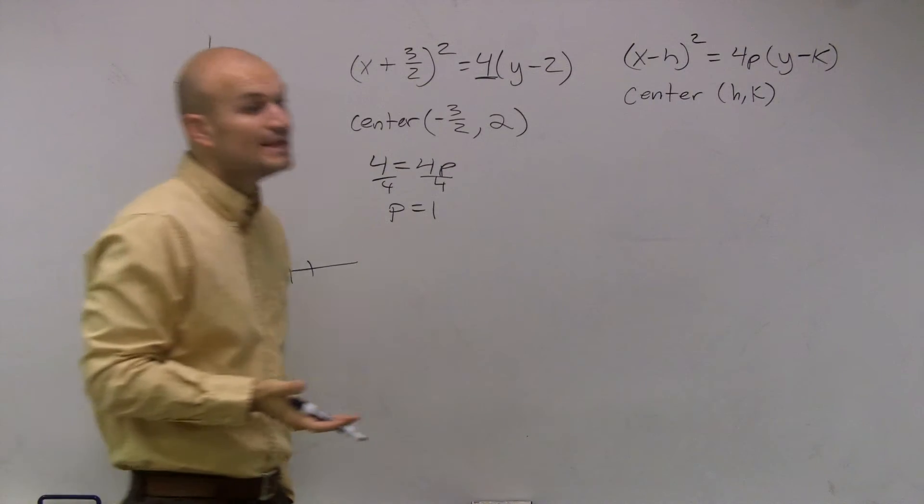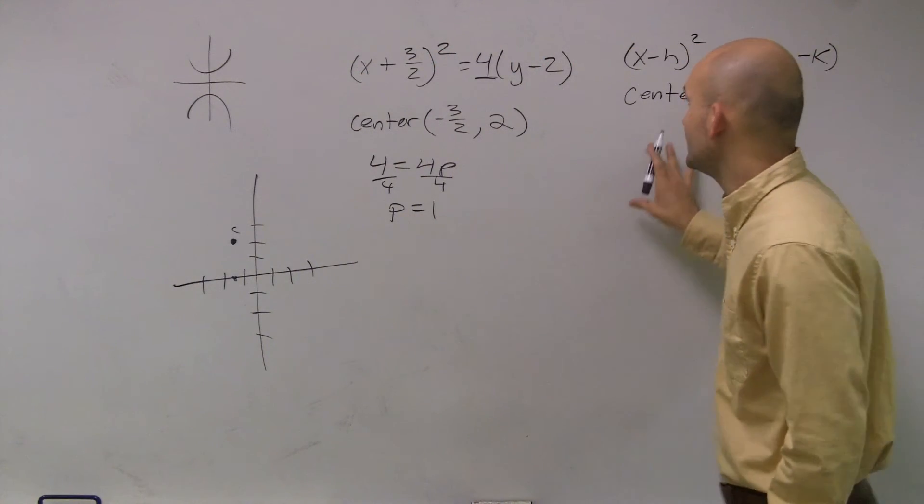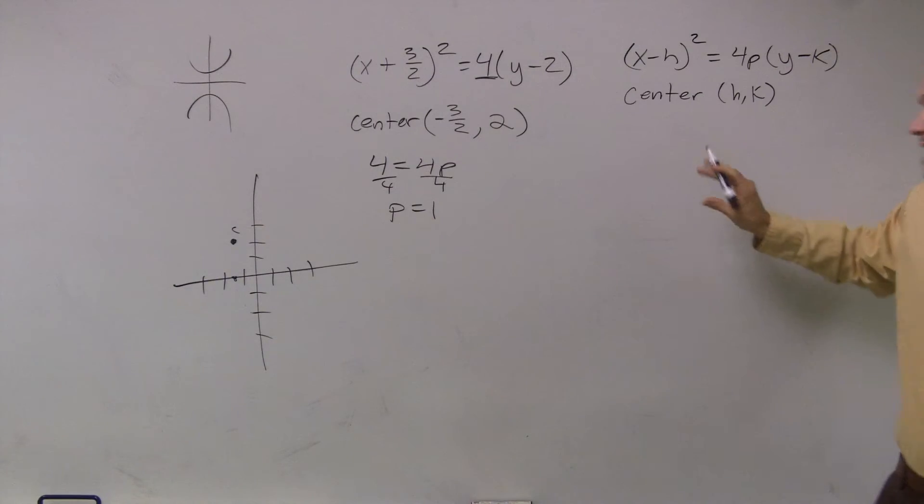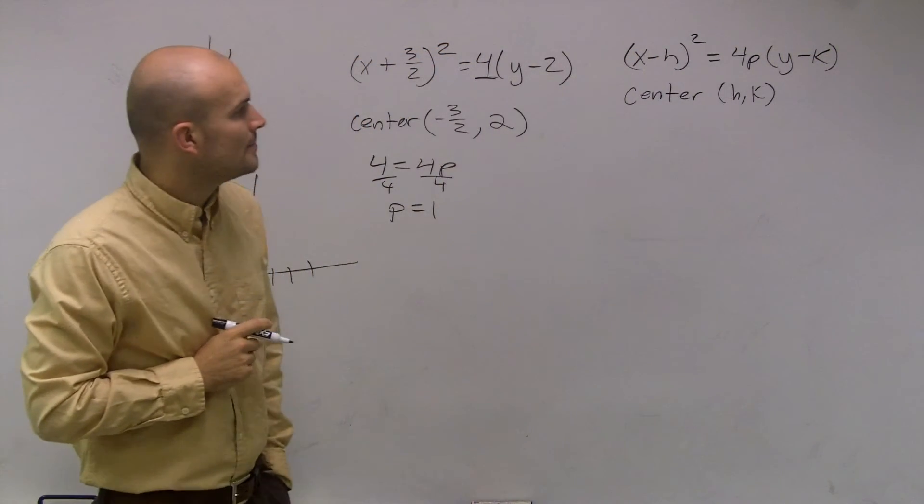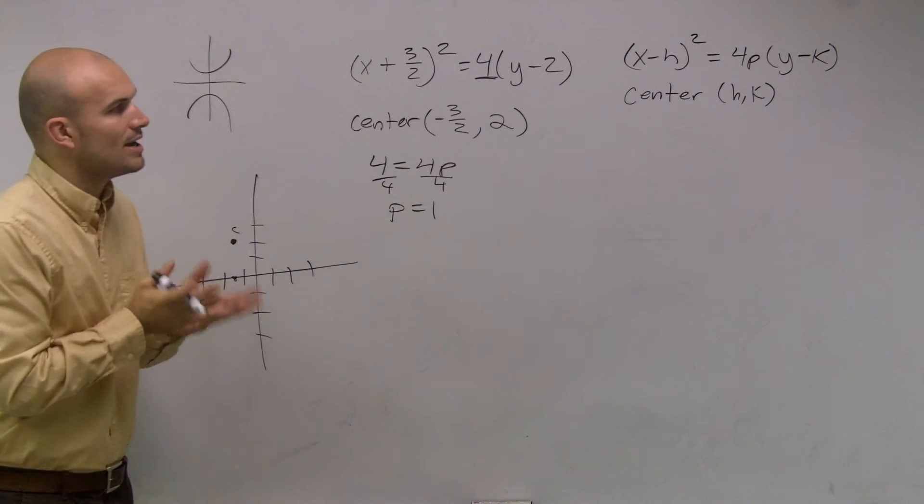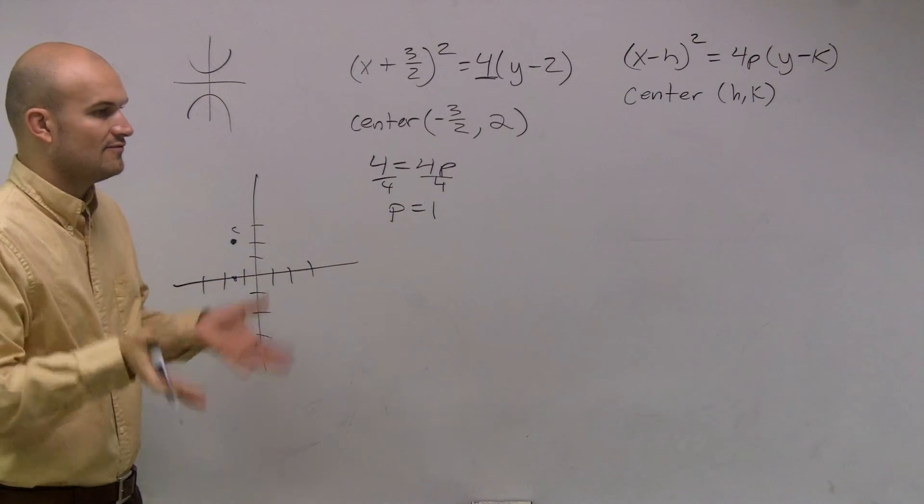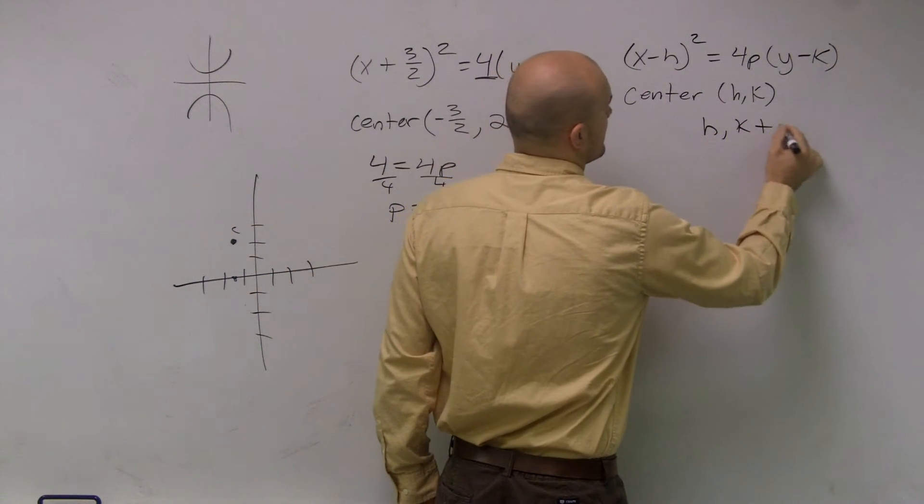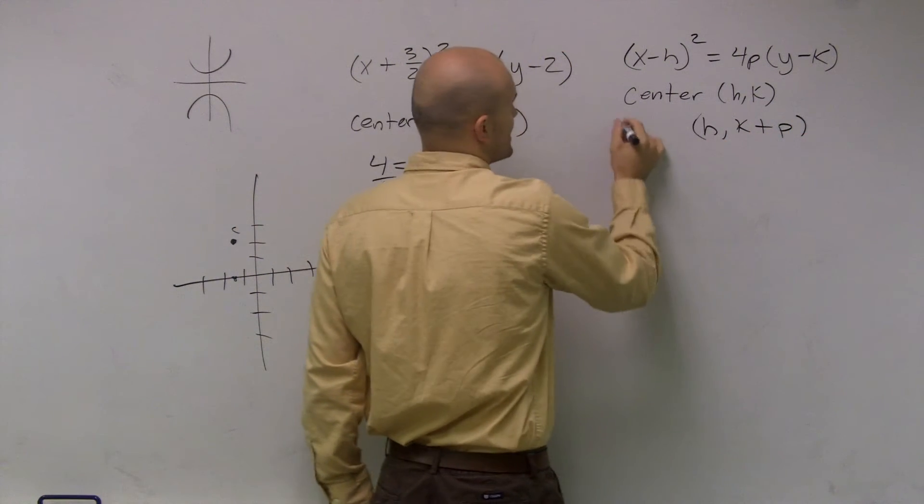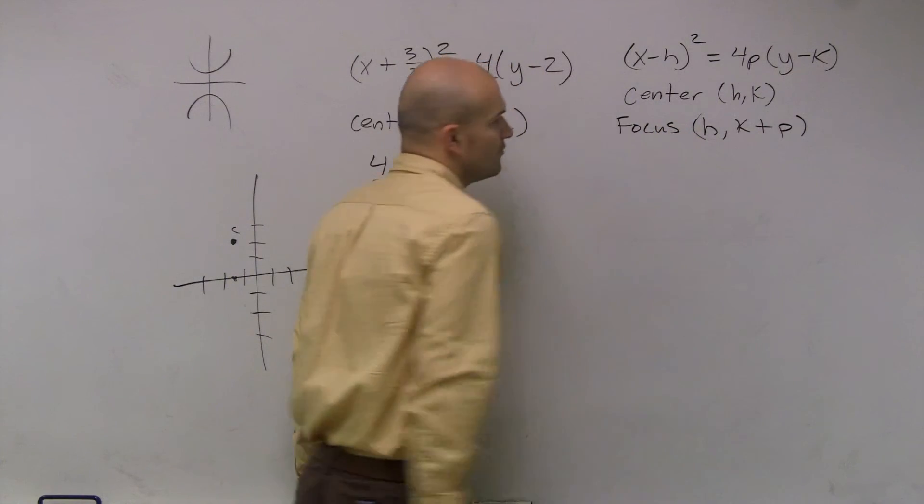Remember, p is very important. When we're dealing with the parabola with a vertical axis of symmetry, our focus is going to be h comma k plus p. And that's going to provide you with your focus.